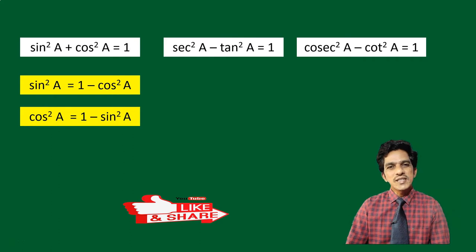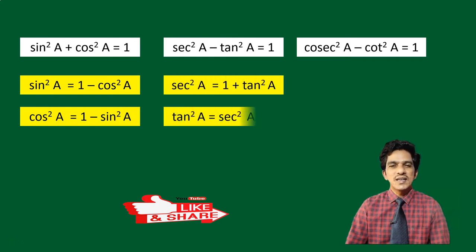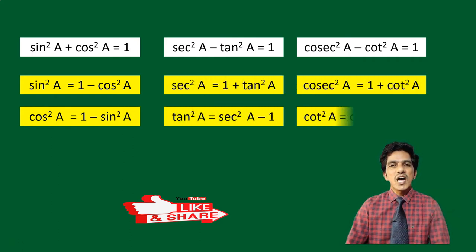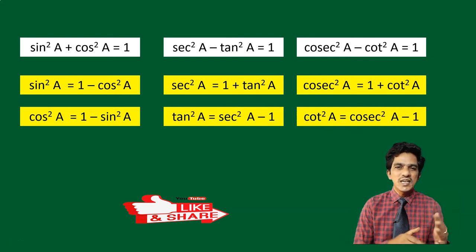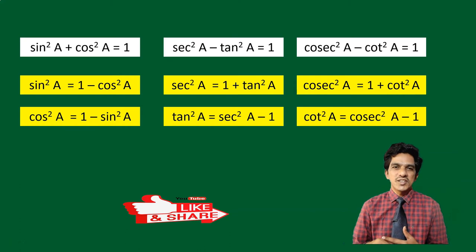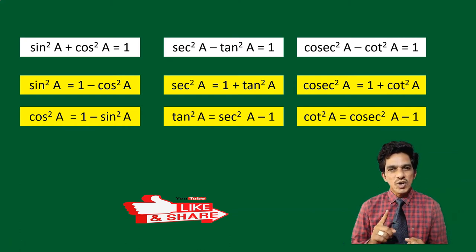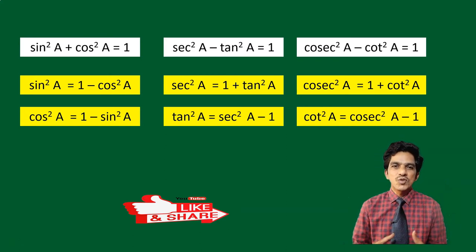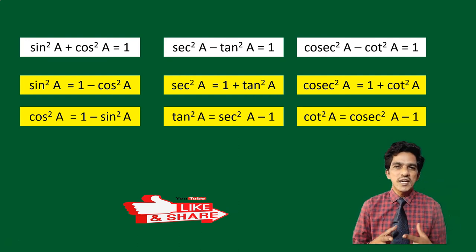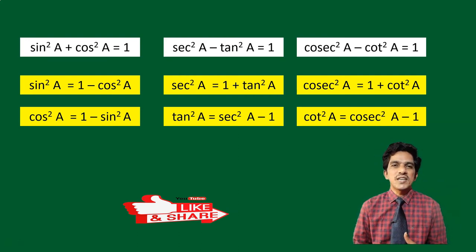From these identities, you can write some more sub-identities. And whenever you have problems involving conversion of one trigonometric ratio to the other, we can make use of any of these identities. If it involves sin and cos, you can write sin square a plus cos square a is equal to 1. If it involves secant and tan, we can use secant square a minus tan square a is equal to 1. And if the problem involves cosecant and cot, we can make use of cosecant square a minus cot square a is equal to 1.